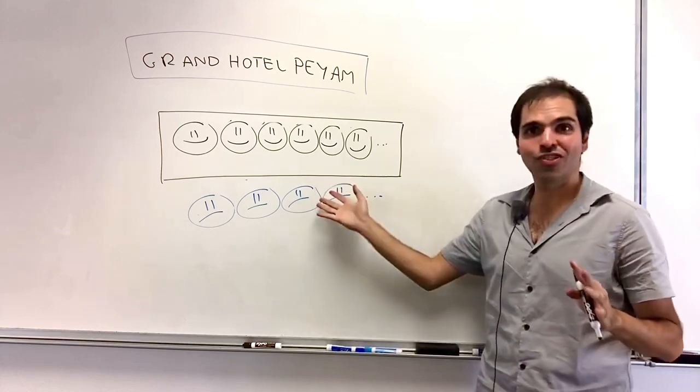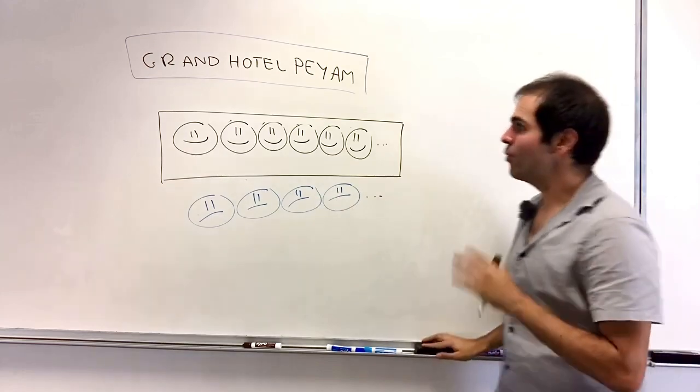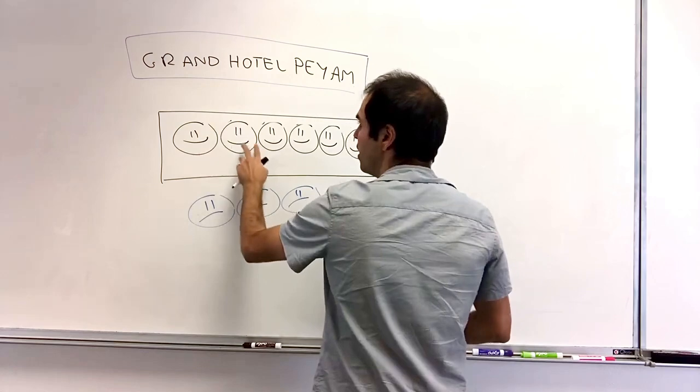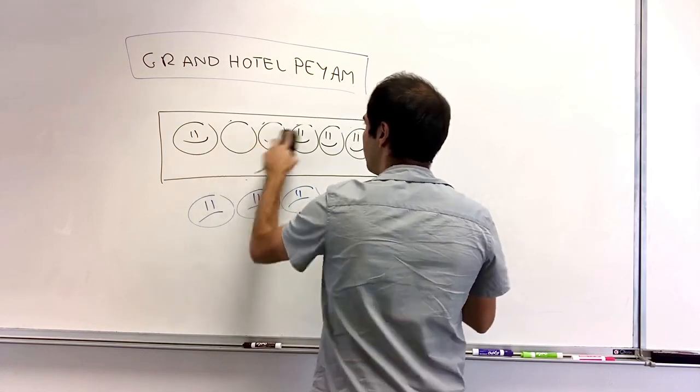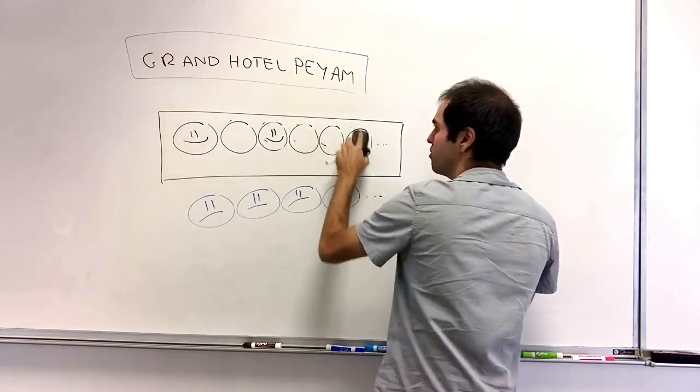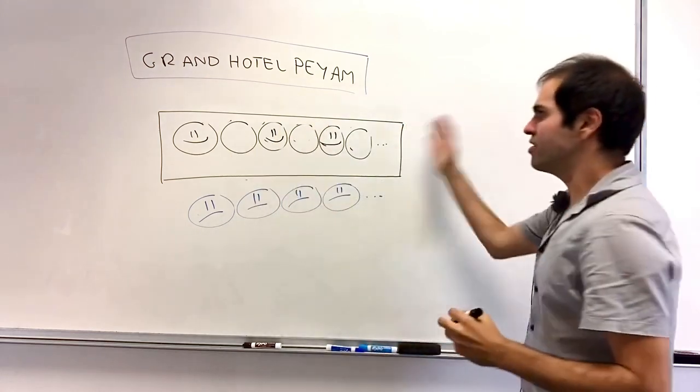You can still make space for them simply by interlacing the guests. What does that mean? The first guest, tell them to stay here. The second guest, tell them to move to room three. The third guest, tell them to move to room six, or room five, et cetera.